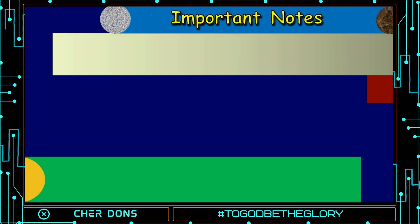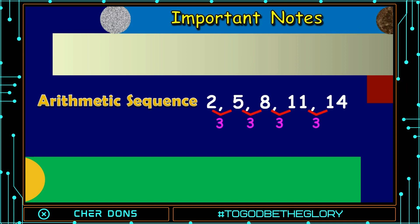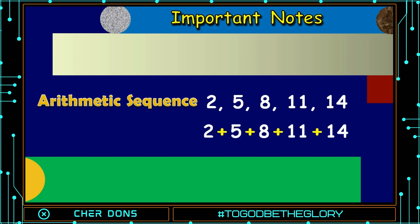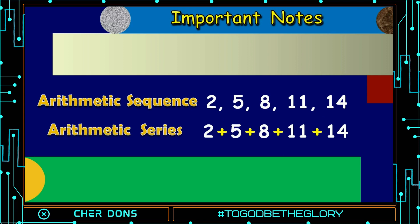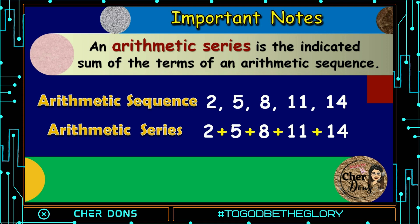Important notes. I have here a sequence: 2, 5, 8, 11, and 14. It is an arithmetic sequence because we have the same common difference D, and that is 3. Now, let us explore it more. What if we insert a plus sign in between the given terms? It becomes 2 plus 5 plus 8 plus 11 plus 14. What do we get? We have the so-called arithmetic series. It is started as an arithmetic sequence, and then we add up all the terms. That's what makes it a series. Remember that an arithmetic series is the indicated sum of the terms of an arithmetic sequence.